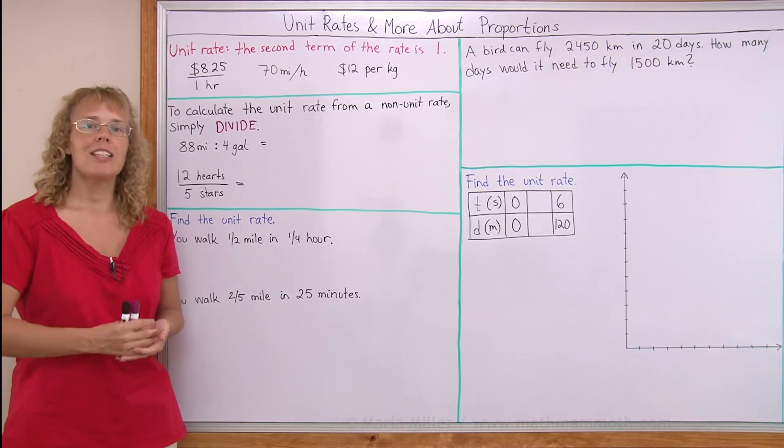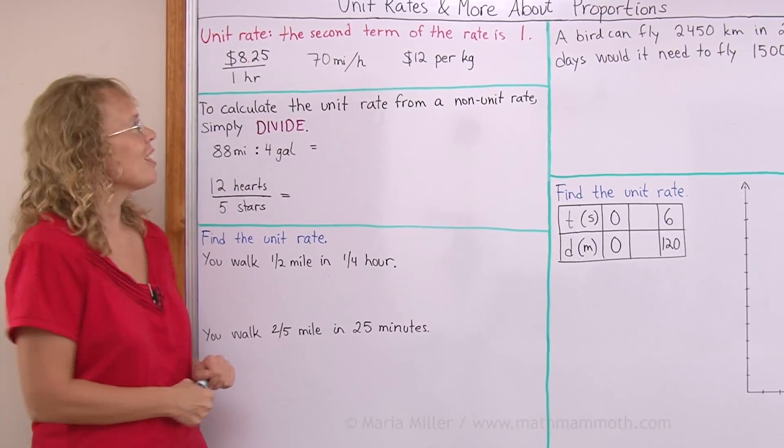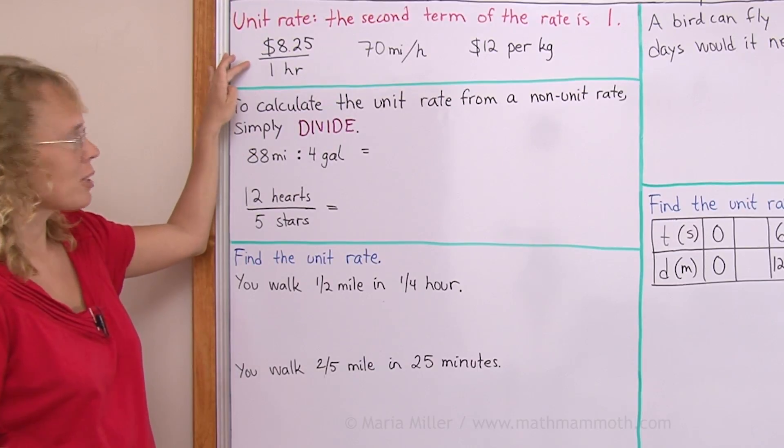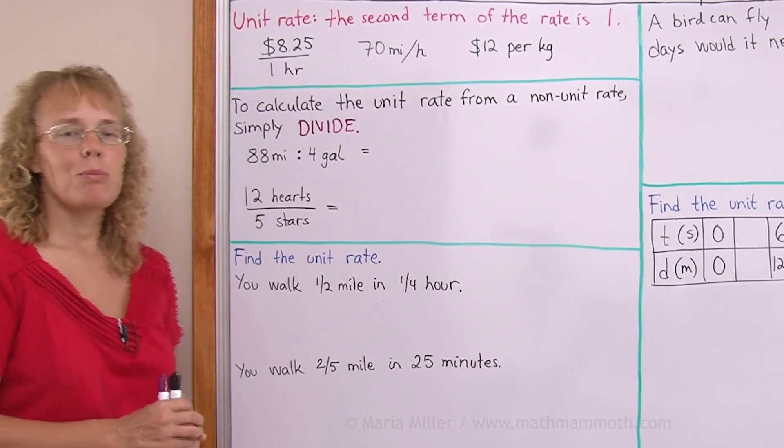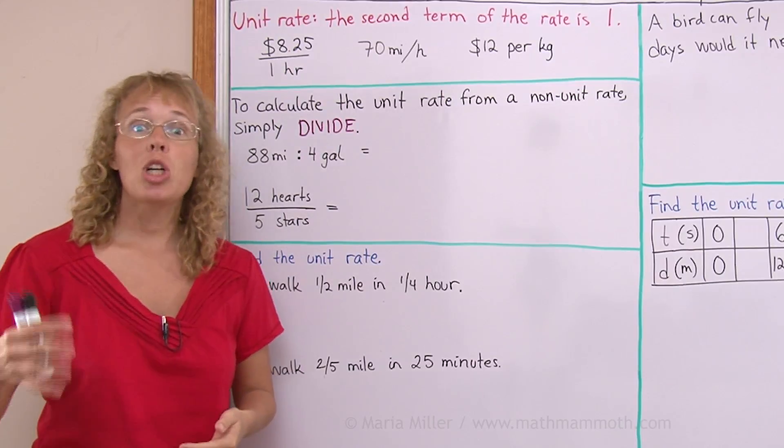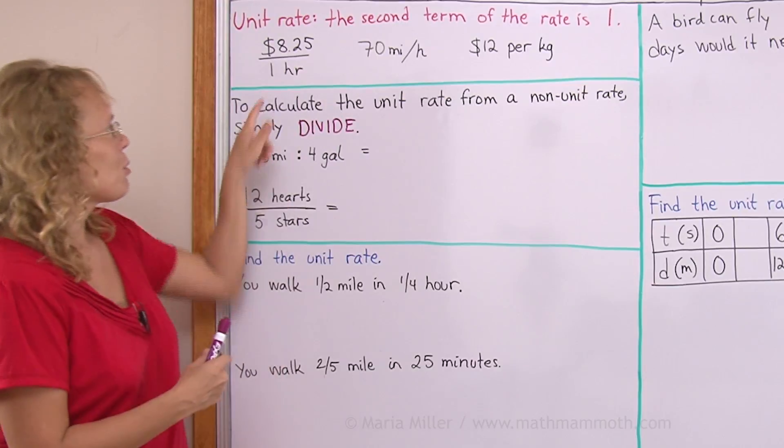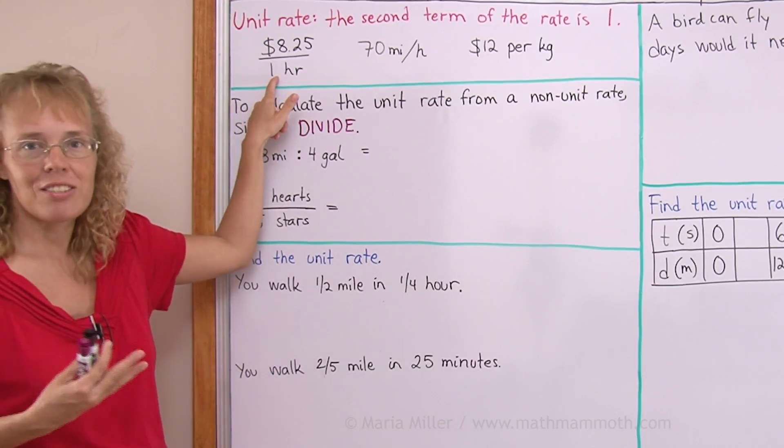It is a rate where the second term of the rate is one unit. Here's some examples, for example $8.25 per one hour, or we might say it's just $8.25 per hour, but we mean per one hour. This one hour makes it the unit rate.